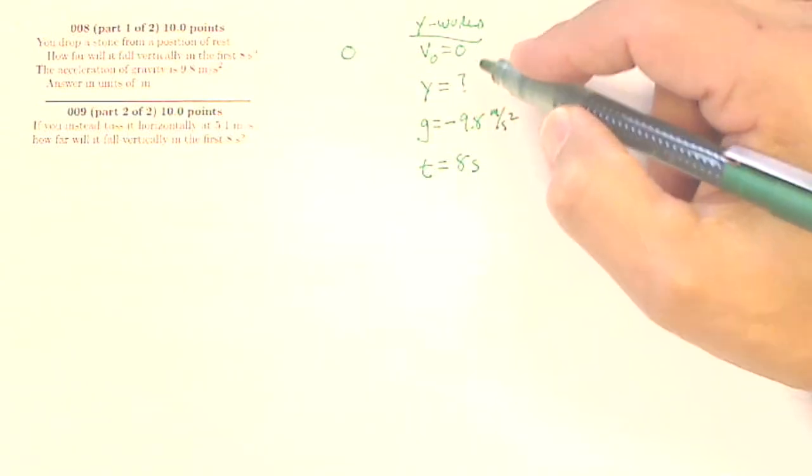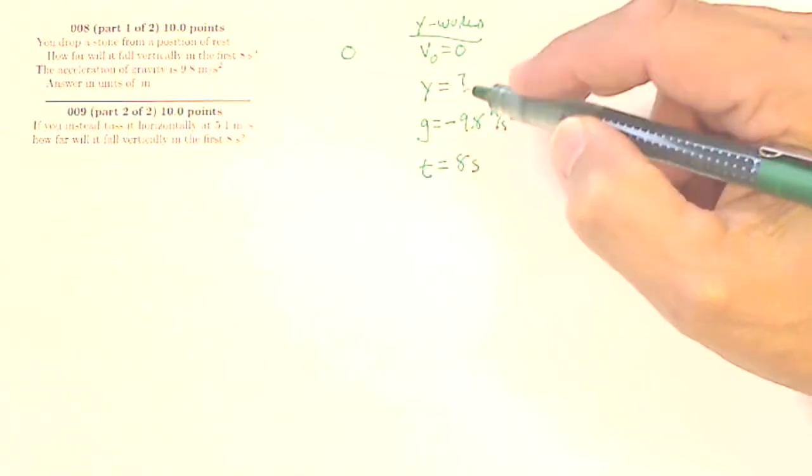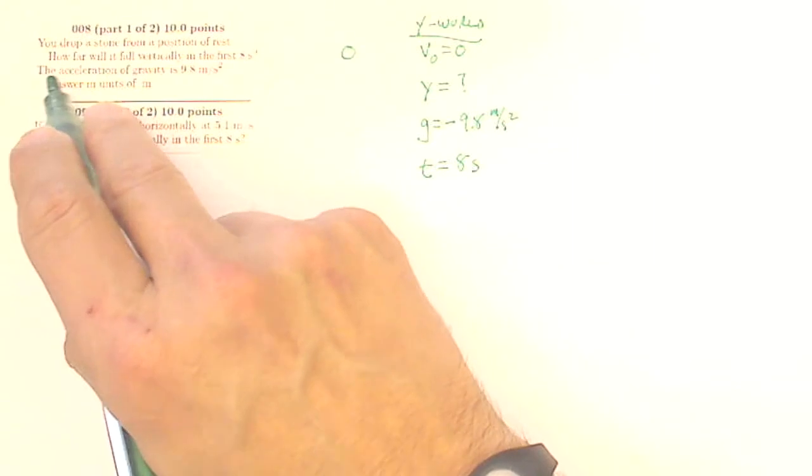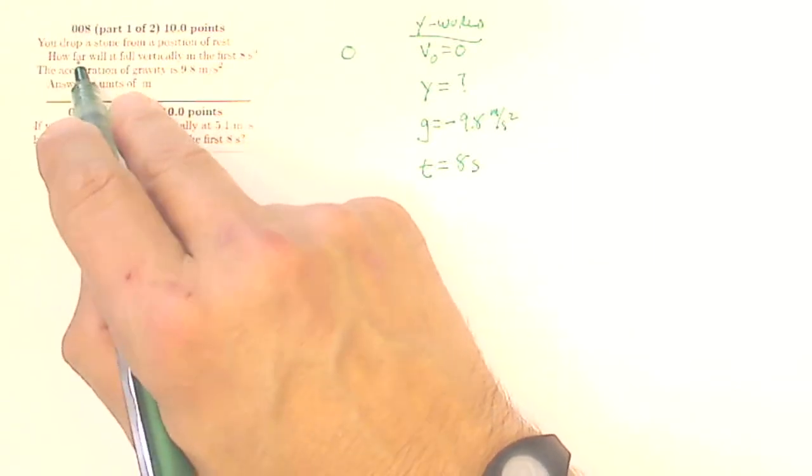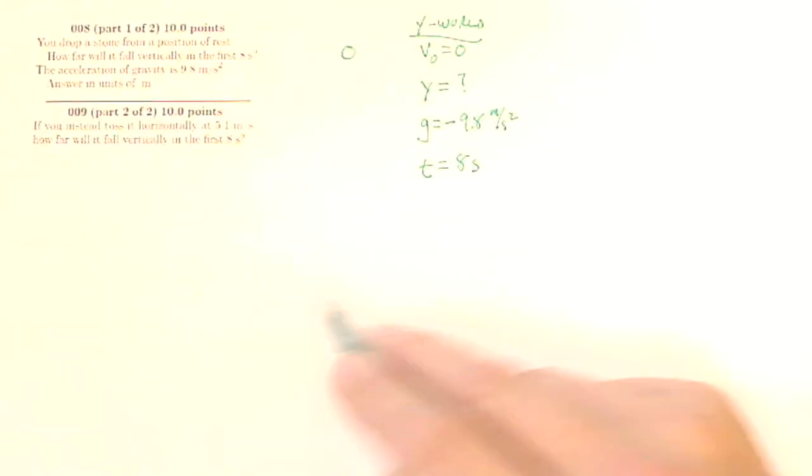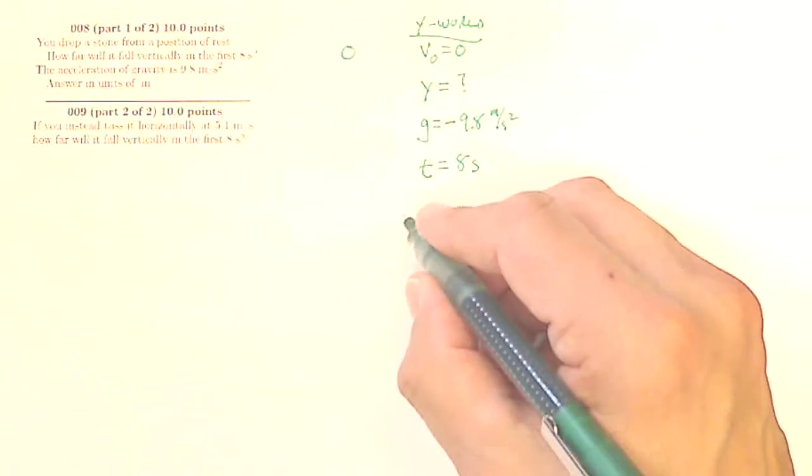So I've got an initial velocity, an acceleration, a time, and I'm looking for a displacement. It says how far, so that's going to wind up being a positive number, so I want the magnitude of this answer.